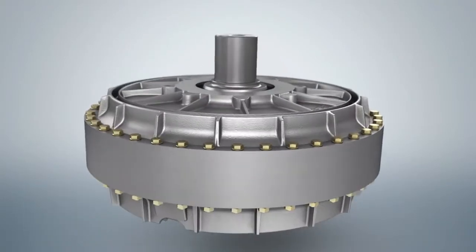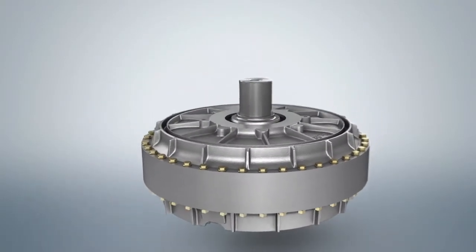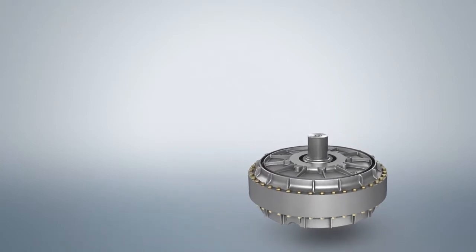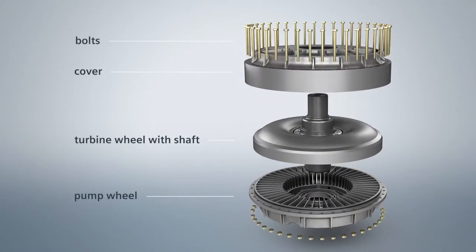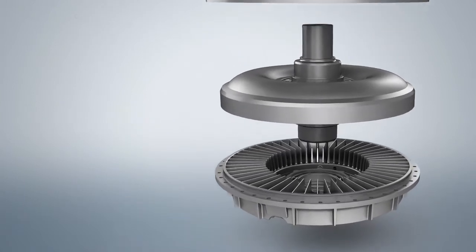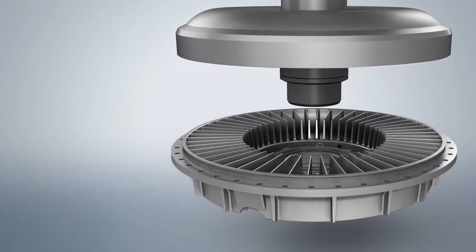The Fludex fluid coupling consists of four primary components: a pump wheel on the drive side, a turbine wheel on the output side, a shaft mounted to the turbine wheel, and a housing cover that is bolted to the pump wheel.